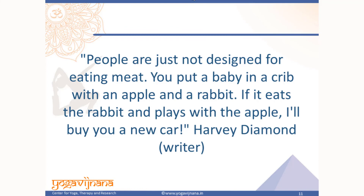That's why I like this quote from R.V. Diamond — it's a beautiful thing he says: 'People are just not meant for eating meat. And if you put a baby in a crib with an apple and a rabbit, if he eats the rabbit and plays with the apple, I'll buy you a new car.' That is summing up the whole thing. If you look at the anatomical differences of different species, humans are more closely related to the frugivore category. All our anatomical modifications closely resemble a frugivore, not a carnivore. This is what nature has built in us — nature is telling us what we are supposed to eat.